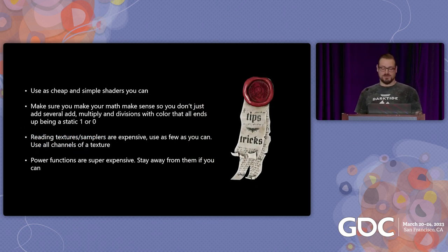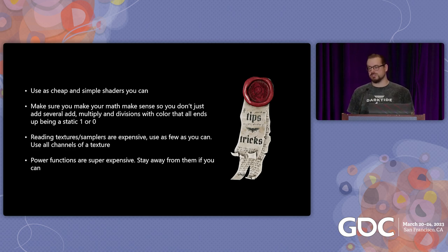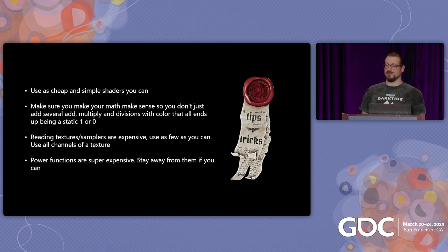Some tips and tricks for shaders: use as cheap and simple shaders as you can. When creating shaders, especially in a node-based system like Unreal's, it's very easy to keep adding nodes. But at the end you might have 15 multiplies and adds that ultimately just result in a static black or white color. Recheck your math after you think something looks good, so you don't have a bunch of instructions that basically don't do anything.